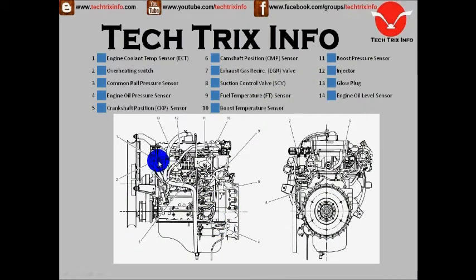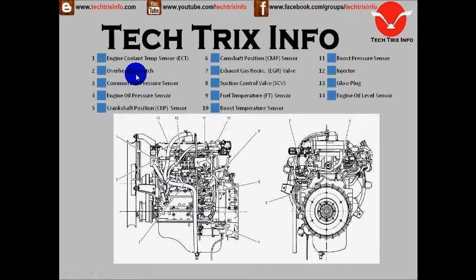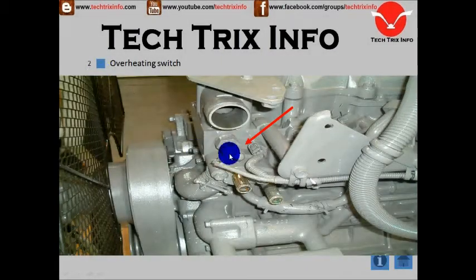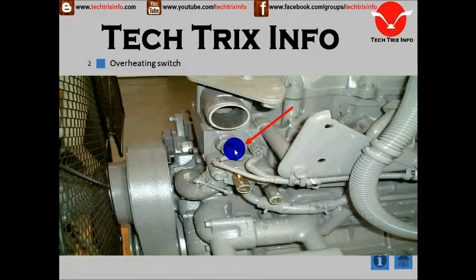Number one is the engine coolant temperature sensor. Number two is the overheat switch. The overheating switch is located over here. Looking from the front of the engine, this is the overheating switch.